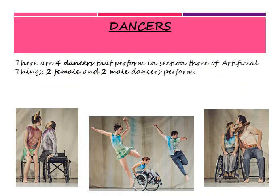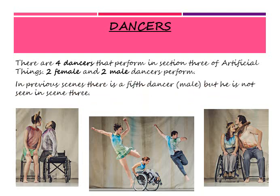Throughout the piece of Artificial Things there are four dancers that perform in scene three — two male and two female. Right at the beginning you see two people only, and as it progresses to scene three we see another two people join them. The bits I've put in bold, please make sure you have those as part of your revision. In previous scenes there are five dancers altogether, so there is another male, but he's not in scene three. Remember: four dancers in scene three, two male and two female, but in previous scenes there is an extra one added.